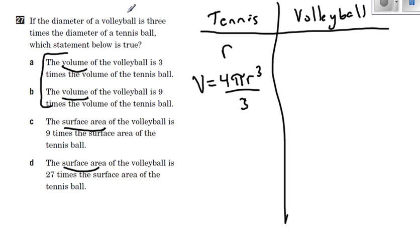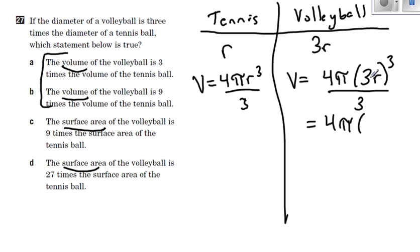That's a tennis ball. The volleyball is three times the diameter. So instead of r, I have 3r. What would that mean about the volume? So 4 pi radius cubed divided by 3. But don't forget the radius this time is 3r because it's triple what it was over here. So if I do that exponent, 3 times 3 times 3 is 27.